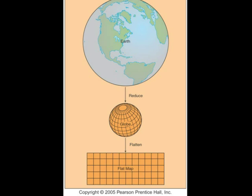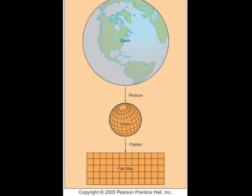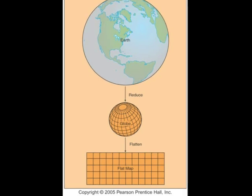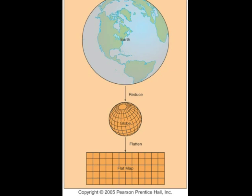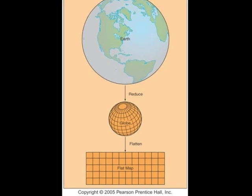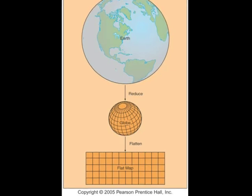Second, the globe is flattened. Since that cannot be done without distortion, it is accomplished in such a way that the resulting map exhibits certain desirable spatial properties.